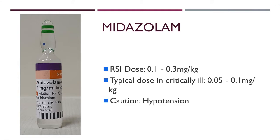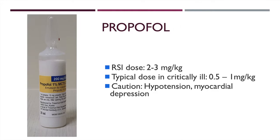The first one is midazolam. Here it comes in 5 mg in 5 mL. Notice that the dose we give in critically ill patients who are hypotensive may be significantly lower than the dose used in classical RSI. This is sometimes termed modified RSI, in which we give titrated doses of sedative agents. A common dose that we sometimes give patients who we worry about hemodynamic instability is about 2 to 3 mg of midazolam. The next drug is propofol. Here it comes 200 mg in 20 mL. Propofol can cause hypotension and therefore in patients who are hypotensive, we give titrated doses of propofol, for example starting with a 30 to 50 mg dose.